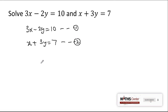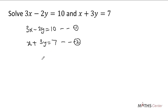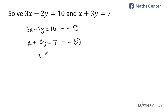I am going to use the substitution method here. I will make x the subject in equation 2. From equation 2 we have x plus 3y equals 7, so if I make x the subject I am going to have x equals 7 minus 3y.